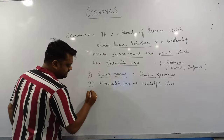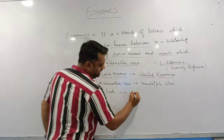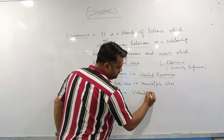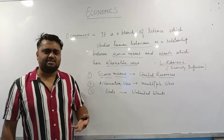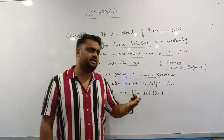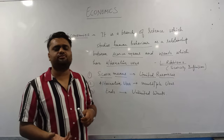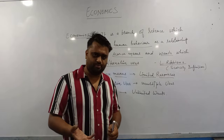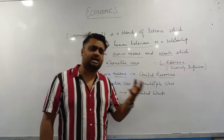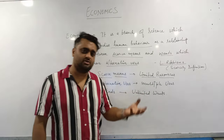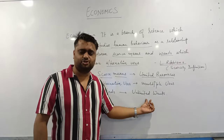And the third component is unlimited wants — that is 'ends'. Ends means unlimited wants. As humans, our wants are unlimited. For example, if my father gifted me a cellphone of ten thousand rupees, after using it for six months, I will ask for a twenty thousand rupee mobile. Then I will want forty thousand, then fifty thousand — it keeps on increasing. So human wants are unlimited in nature.